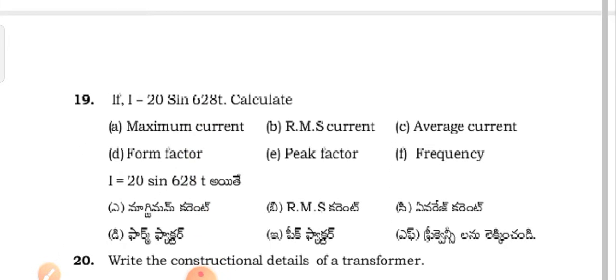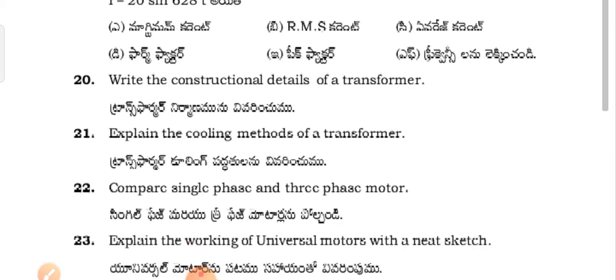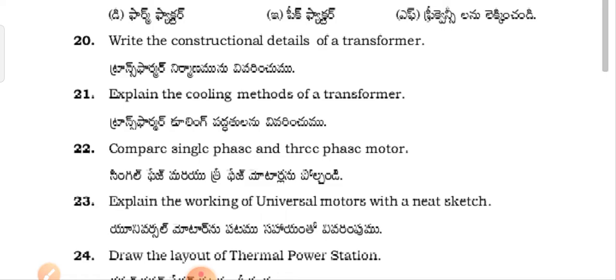If i = 20 sin(620t), calculate the maximum current, RMS current, average current, form factor, peak factor, and frequency. Write the construction details of the transformer. Explain the cooling methods of a transformer.